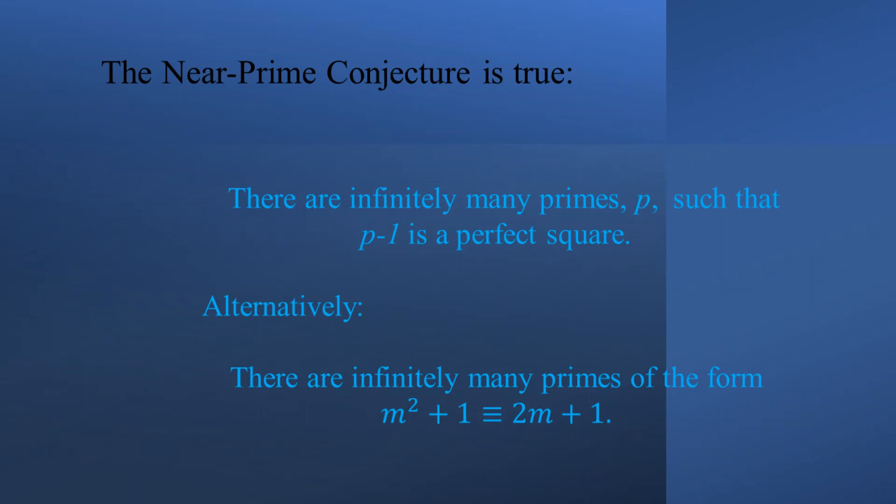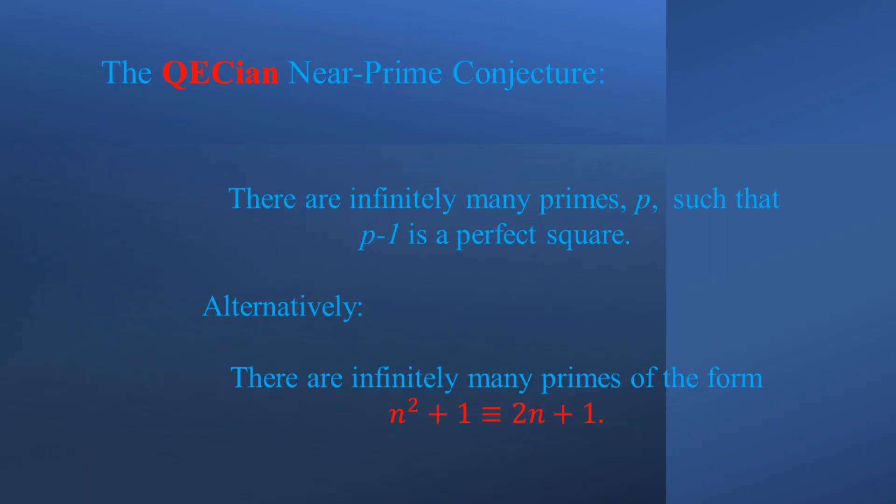This concludes solving the four original Landau problems. But the Quikian near prime conjecture still remains unanswered: are there infinitely many primes of the form n squared plus 1, which is equivalent to 2n plus 1? It seeks an answer for 2n plus 1, not 2m plus 1. That is, it seeks a solution for all integers, not some arbitrary integer. If we were to rely upon the equivalency of odd primes to odds, then we could easily substitute m for n and get a valid solution. But to double-check the accuracy of our proof, let's suppose we cannot apply this equivalency and try to find an alternative route.